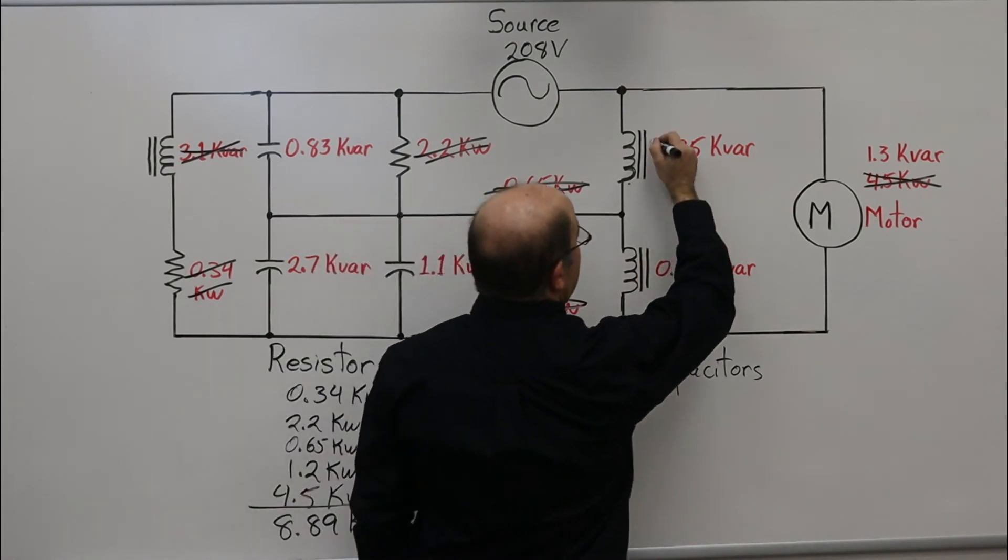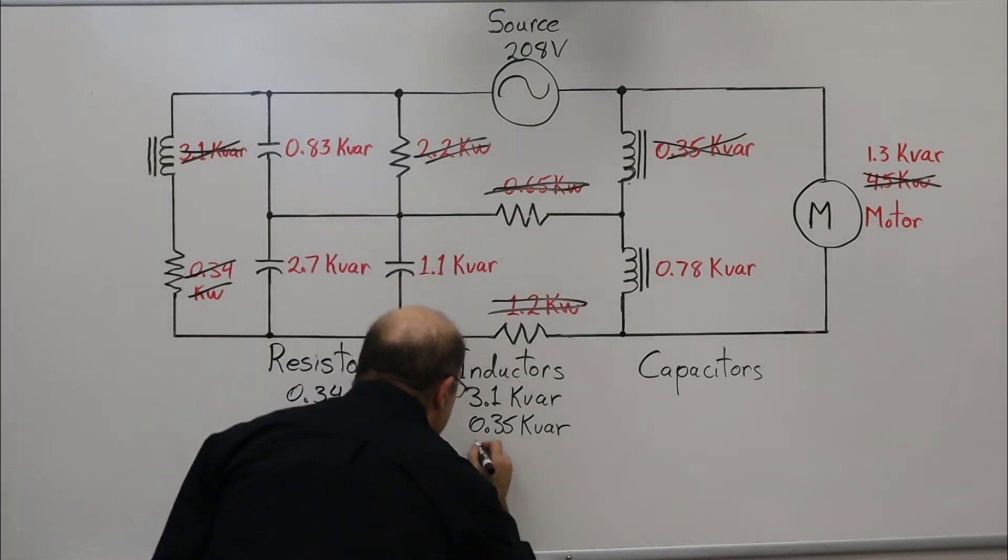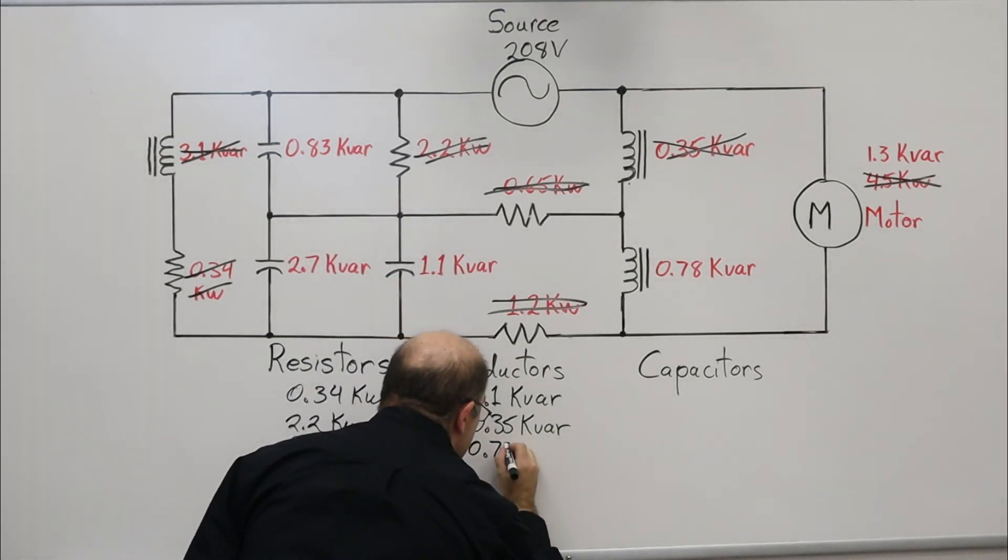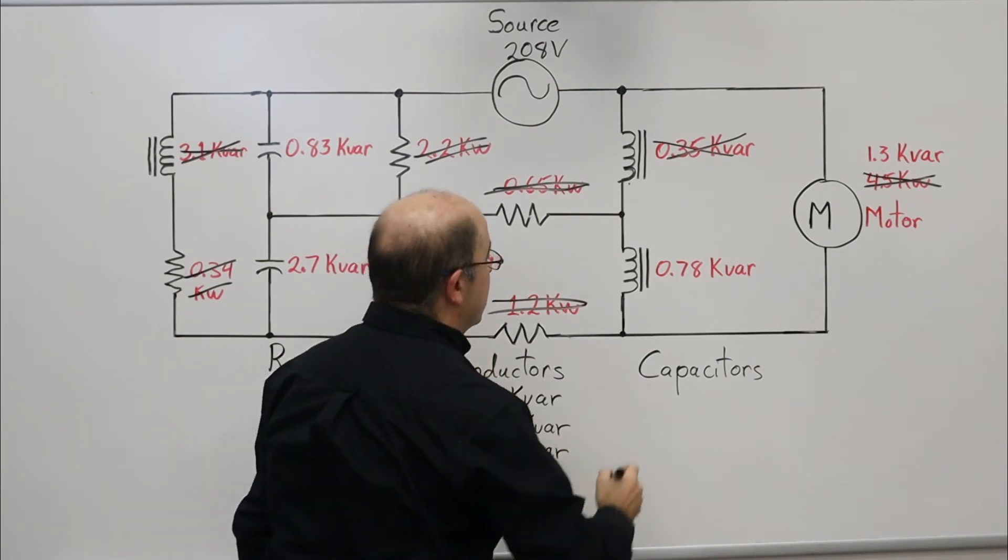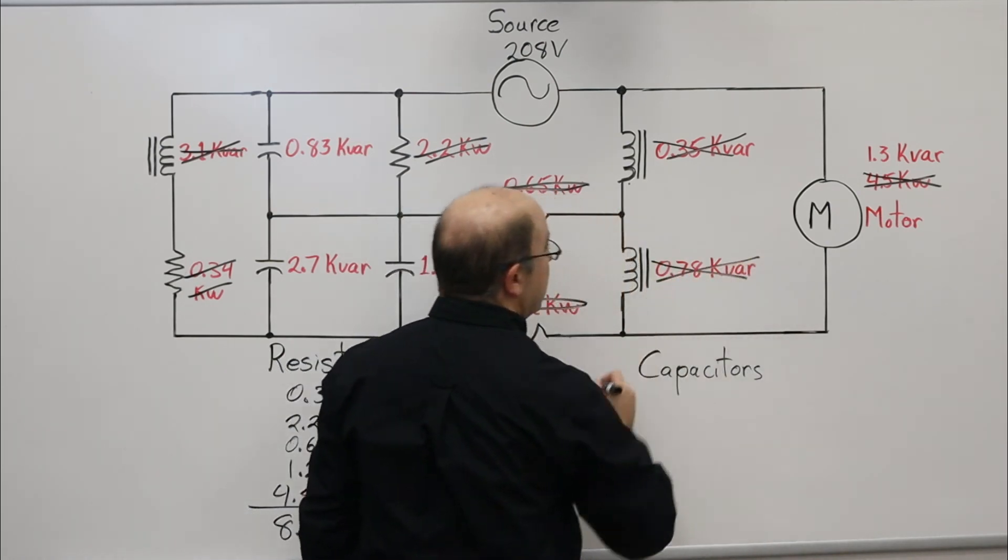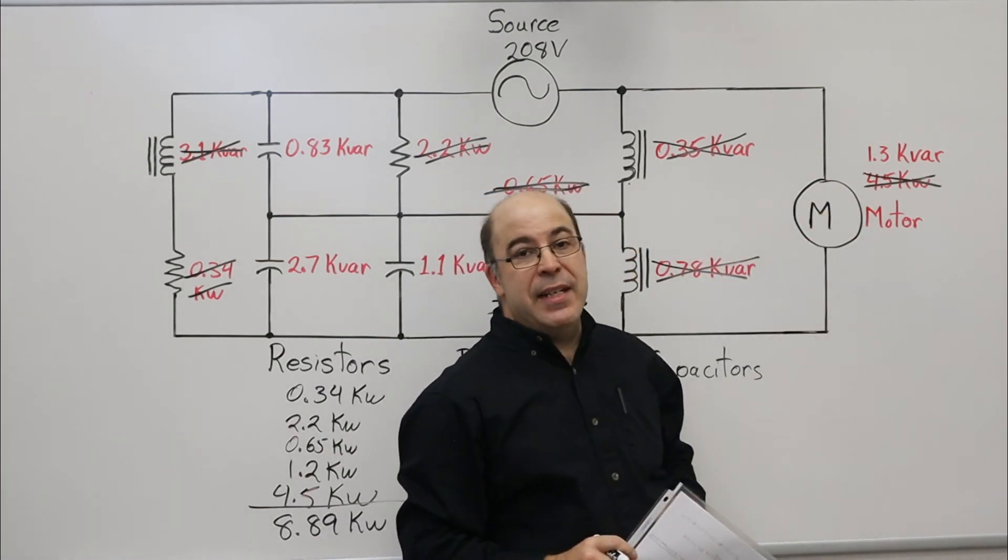Cross that out. Next one: 0.78. And let's not forget our motor: 1.3 kVAR.